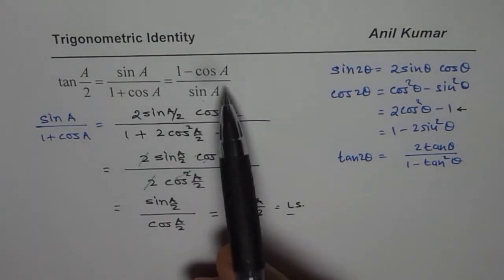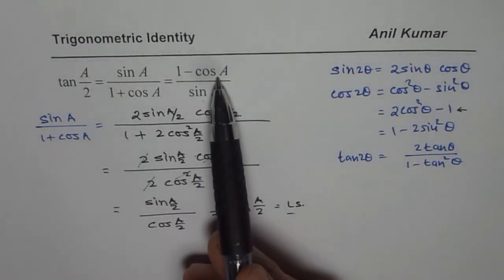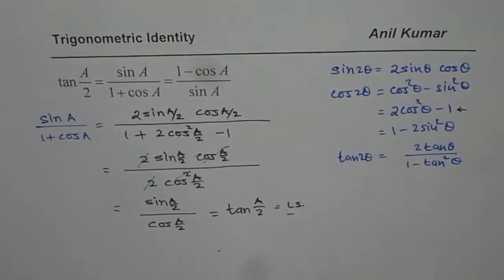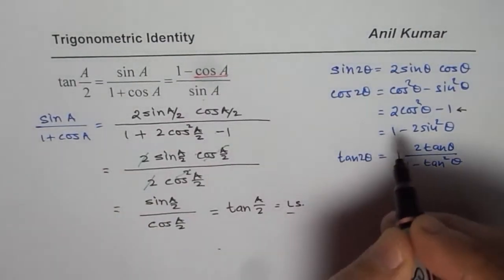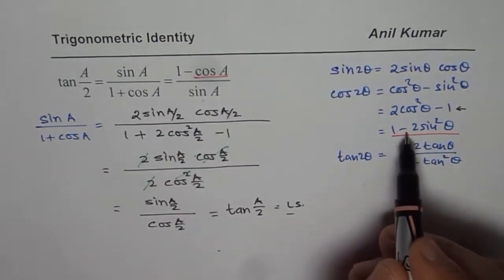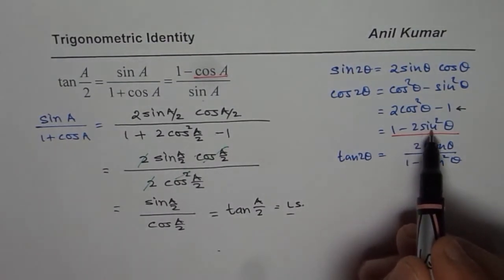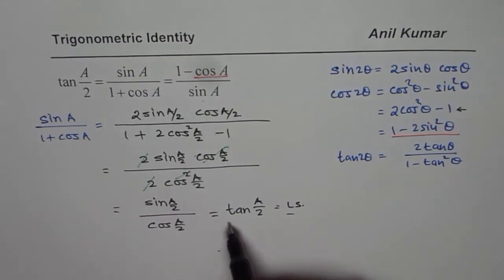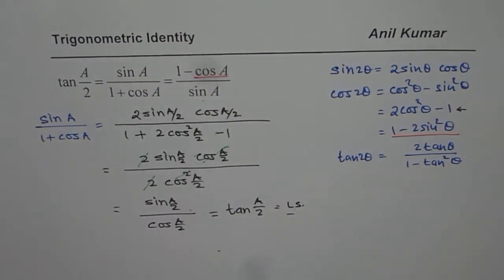Similarly, you can start from the other side — 1 minus cos a over sine a. In this case, you should use cos a equals 1 minus 2 sine squared(a/2), so that the 1 and 1 cancel out and you easily prove the same result. That is the strategy to be adopted — it is a very important and interesting question to work through.